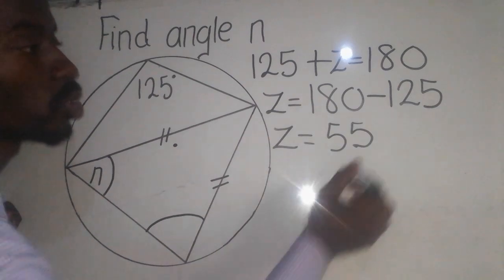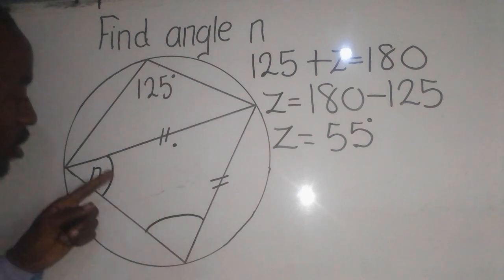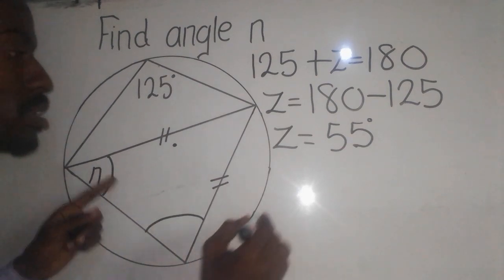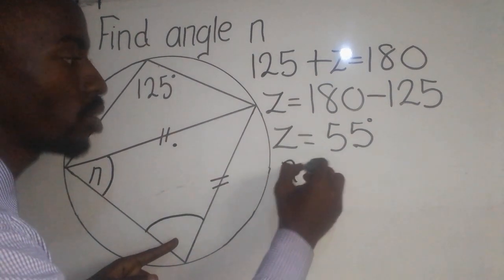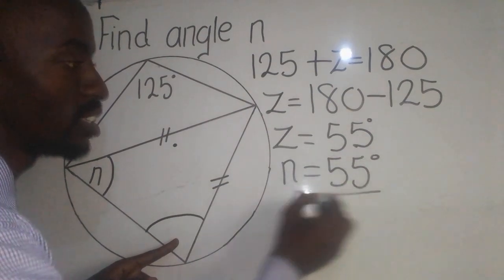So z equals 55 degrees. Now we know that since this angle is equal to this one, that simply means that n as well is equal to 85 degrees.